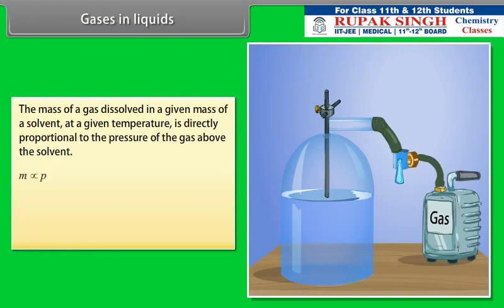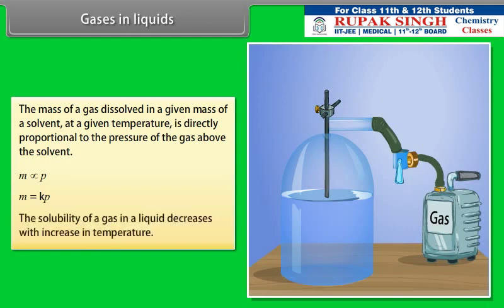M is directly proportional to P, therefore M is equal to KP. The solubility of a gas in a liquid decreases with increase in temperature.